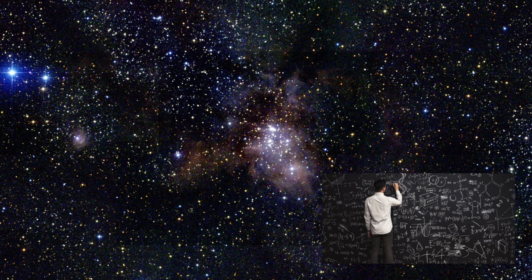A theory of everything, final theory, ultimate theory, or master theory is a hypothetical, single, all-encompassing, coherent theoretical framework of physics that fully explains and links together all physical aspects of the universe.